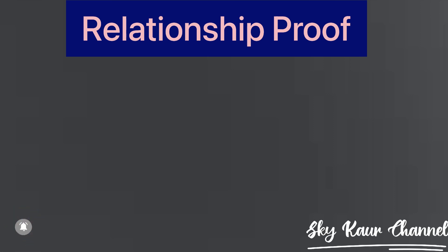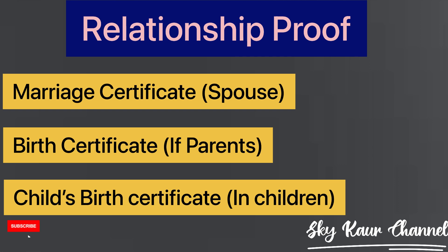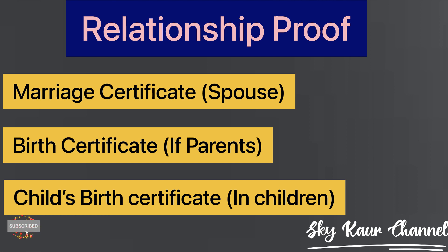The very first document you need for a family visa is the family relationship proof. If you are inviting your wife, the relationship proof will be your marriage certificate. If you are inviting your parents or children, the relationship proof will be the birth certificate. In case of parents, the birth certificate will be yours — the one that mentions the name of your parents. If you are inviting your child, your child's birth certificate is required because it contains your name and your wife's name.